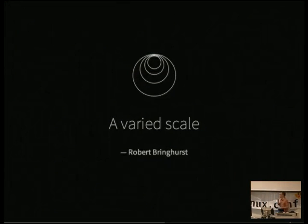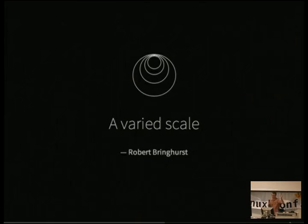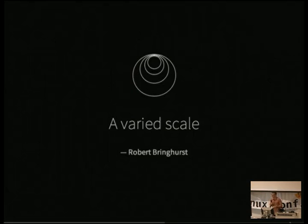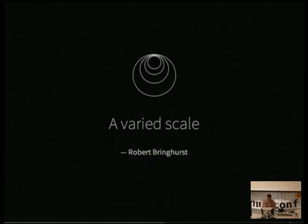The Elements of Typographic Style author talks about a varied scale: you grab one unit, one metric, and scale up by a set proportion, ratio, or percentage on each object incrementally. It's how you set different sizes of fonts, measure things, and create things. Whenever you see those things with lots of circles drawn on them, it's because all those circles match a certain ratio. That's why you see pictures of logos with circles over them.